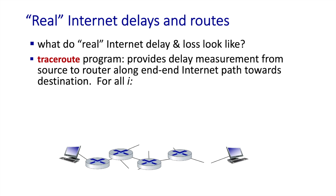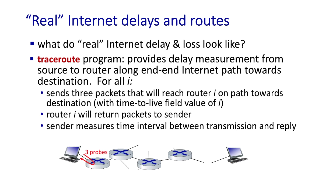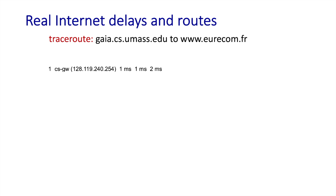Traceroute is a program that runs on your laptop or computer. It provides live measurements of packet delay from the sender — your computer — to routers along a path towards a destination. Traceroute first sends three packets to the first hop router, which sends a reply message in response to each packet. The Traceroute sender measures the round trip time, the RTT, from when it sends the message until it gets the reply, and displays those three RTT measurements. It then continues hop by hop until the final destination is reached.